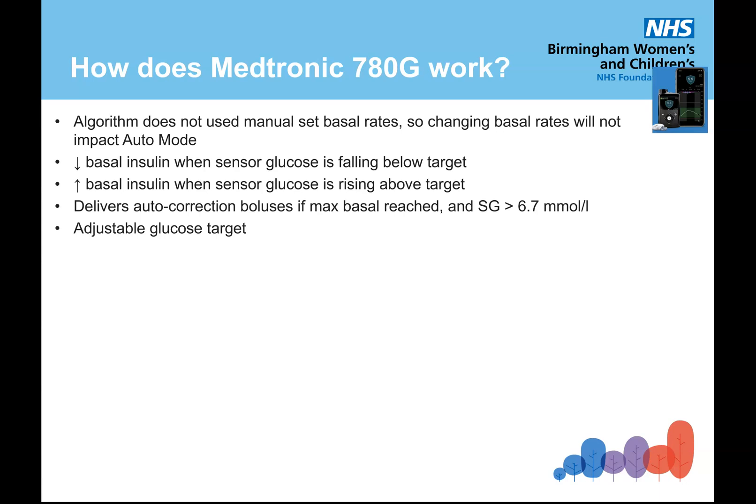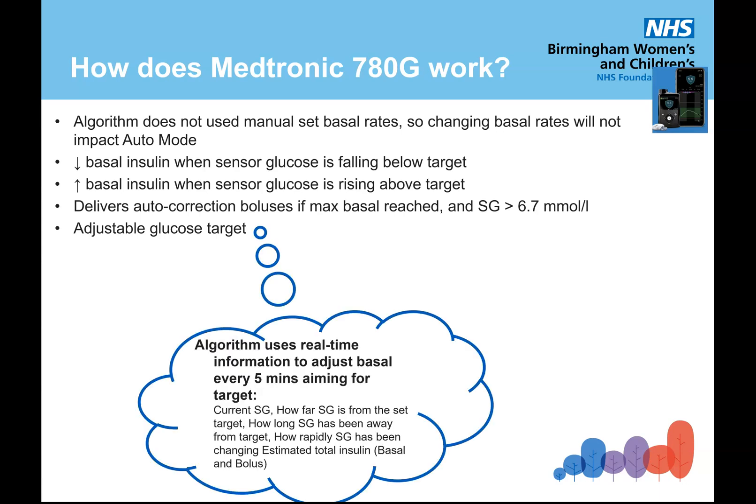When the glucose level is falling below target it will reduce the insulin; when it's going above target it will increase insulin. Importantly, this system is very aggressive at managing highs — it will deliver auto corrections if the max basal is reached and the sensor glucose level is above 6.7, and it has an adjustable target glucose level. It really looks at the current sensor glucose, how far it is from the target, how long it has been away, and how rapidly it has been changing to estimate total insulin. It doesn't focus on previous insulin on board or carbs — it's very glucose-centric, therefore it can be a lot more aggressive in tackling highs compared to other systems.